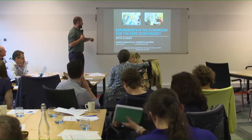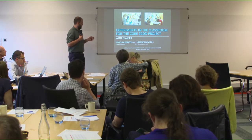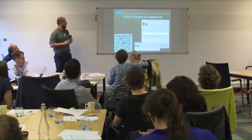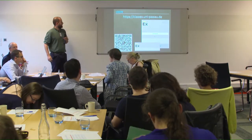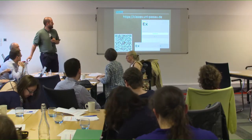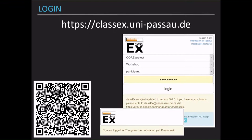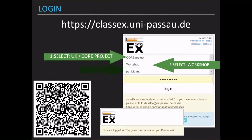I don't want to say much — it's just hands-on. So I would just ask you to once more log in. It's quite easy: you just go to this website. No numbers involved here, or you can also scan the QR code. If you go there, you can select UK and then the CORE project. There's a workshop. Participant should be pre-selected. The password is Warwick with a small 'w' in the beginning.